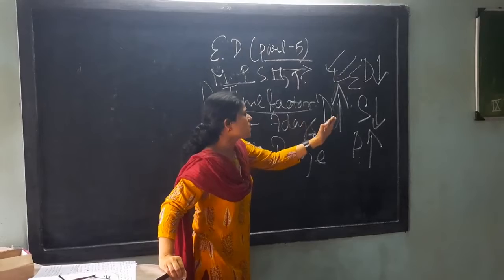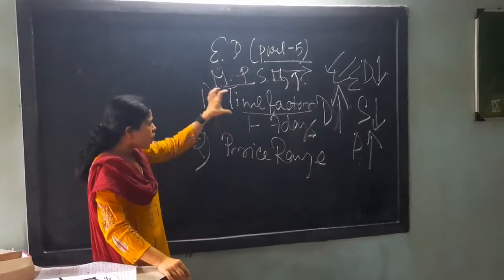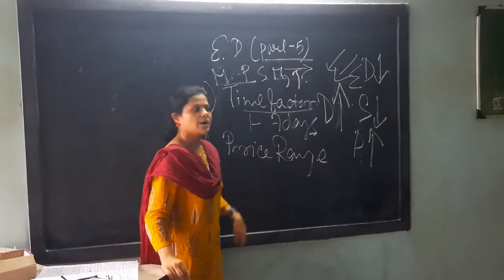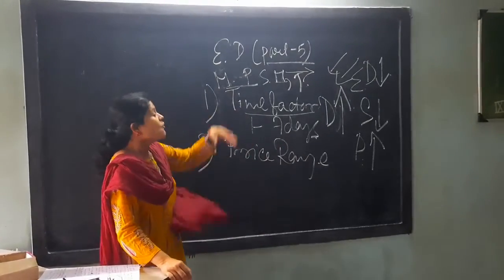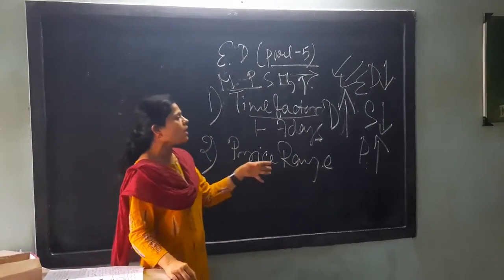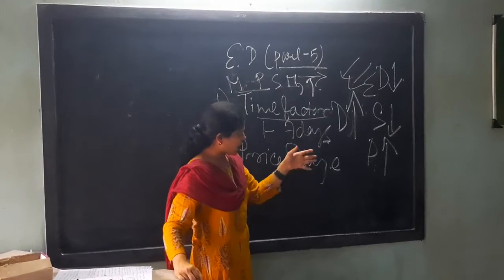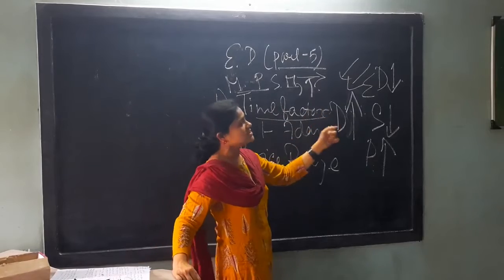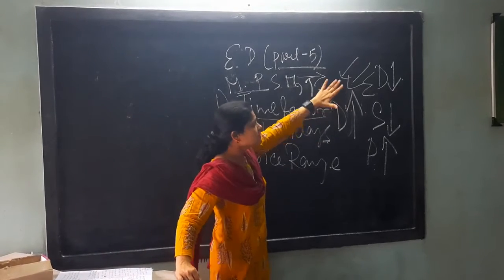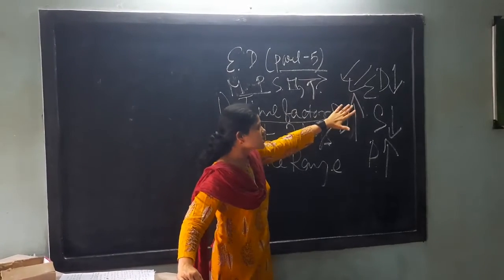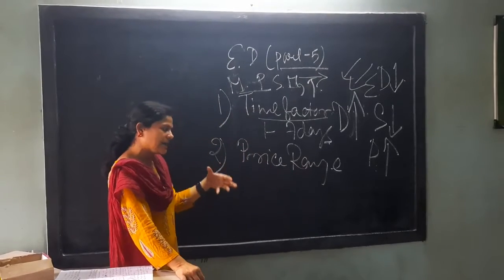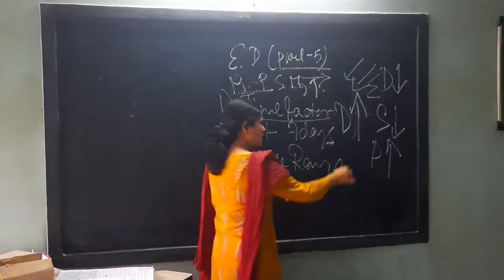As we are approaching towards the longer time production, short time is very less. Production cannot be more. Tastes and preferences of the consumer cannot be changed. It remains same. That's why the price elasticity of demand is inelastic. But when we are moving towards the longer time, time is unbound. The taste and preferences of the consumer will be changed. As a result, the demand will fall or remain same.